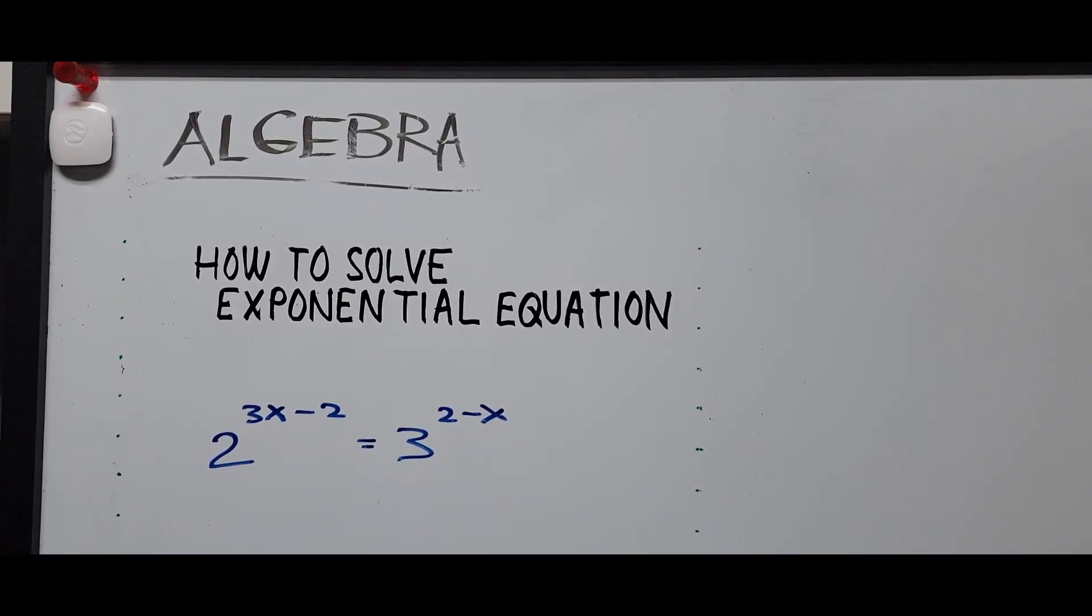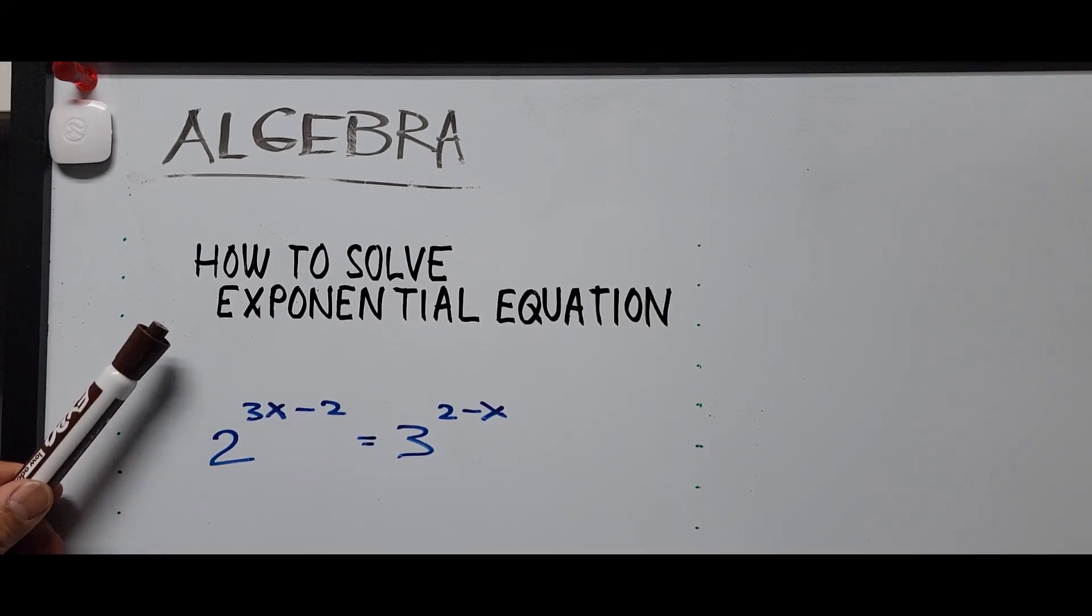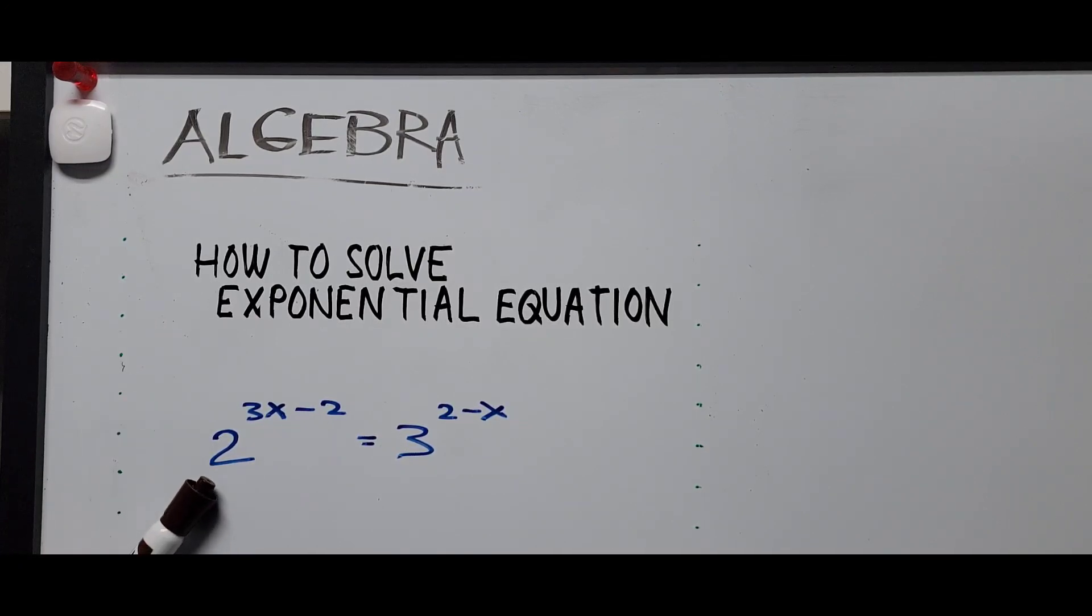Good morning or good evening everybody, this is Cassiano in EZ Math. This video is about solving exponential equations. We have here 2 raised to 3x minus 2 equals 3 raised to 2 minus x.